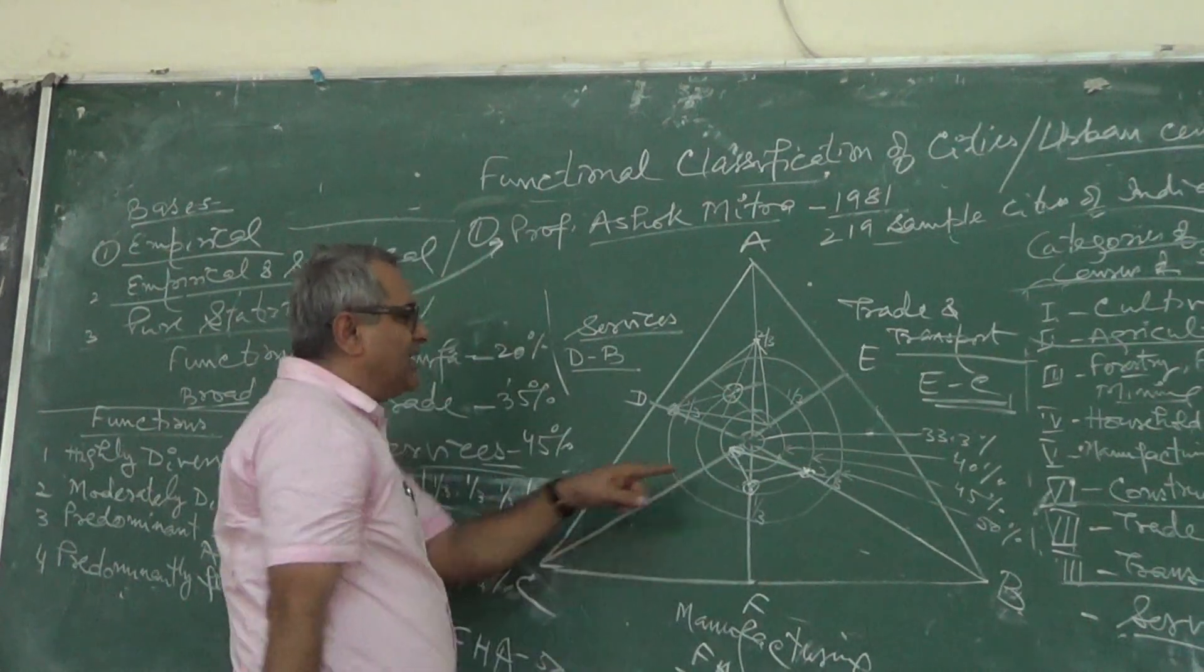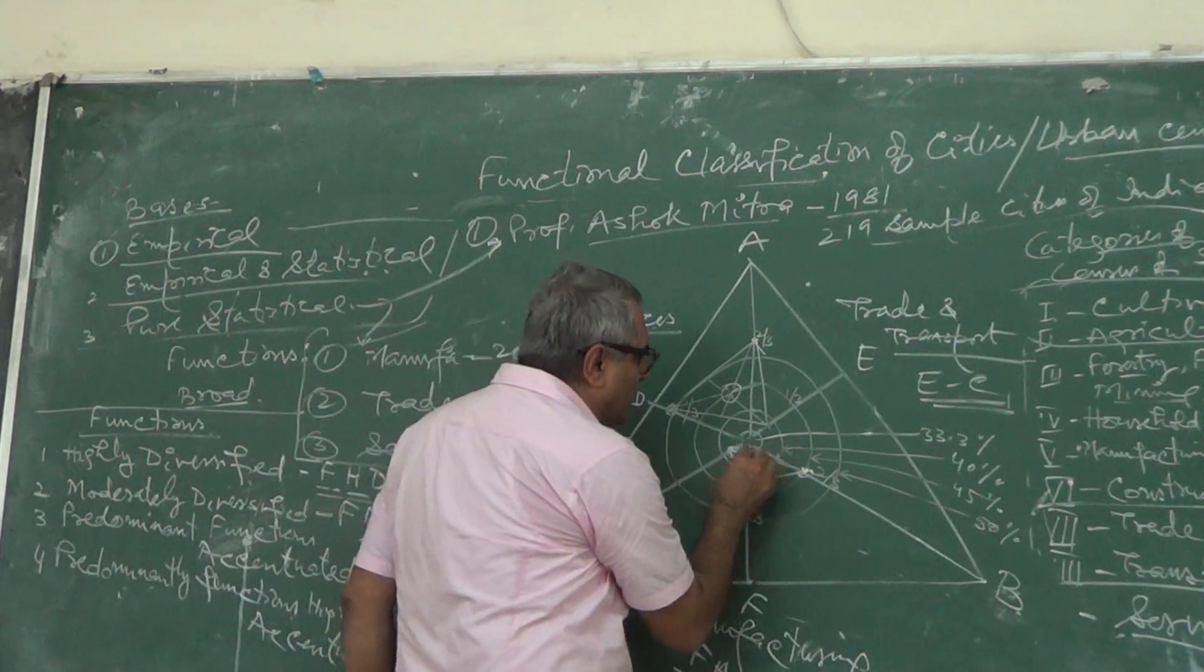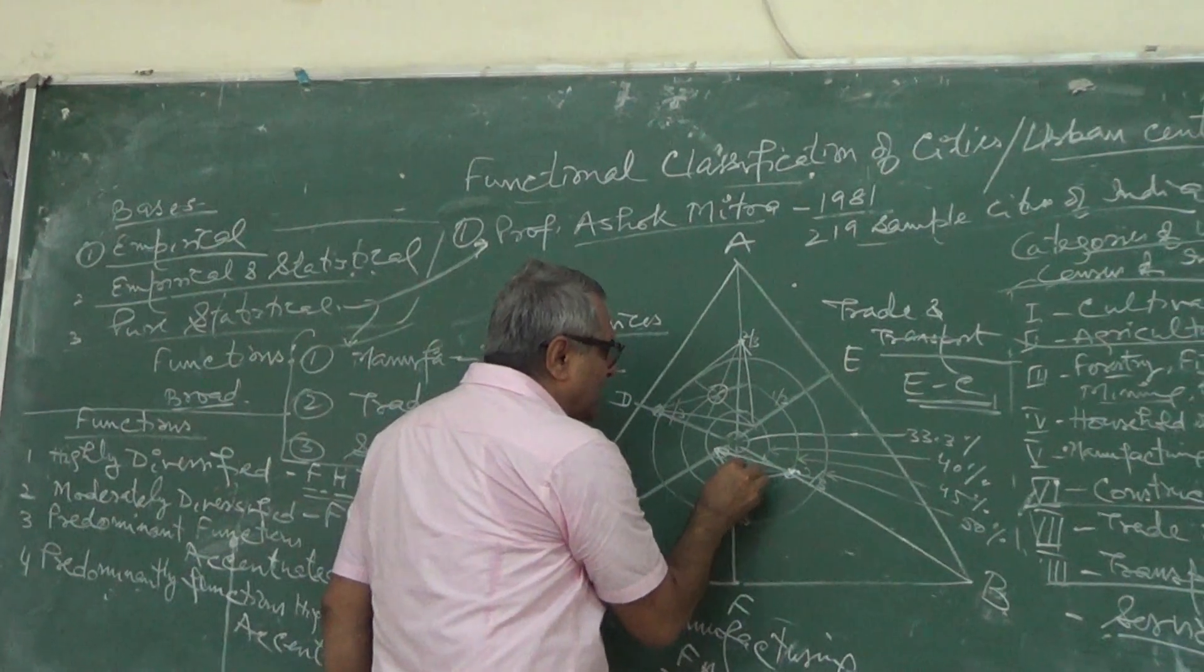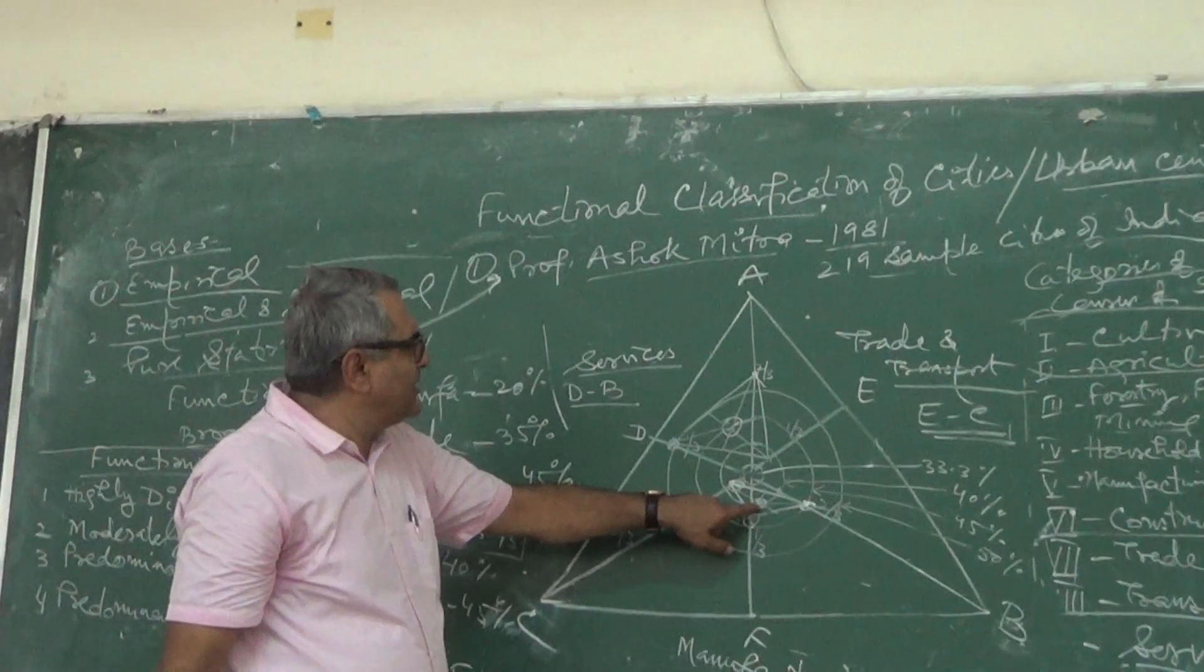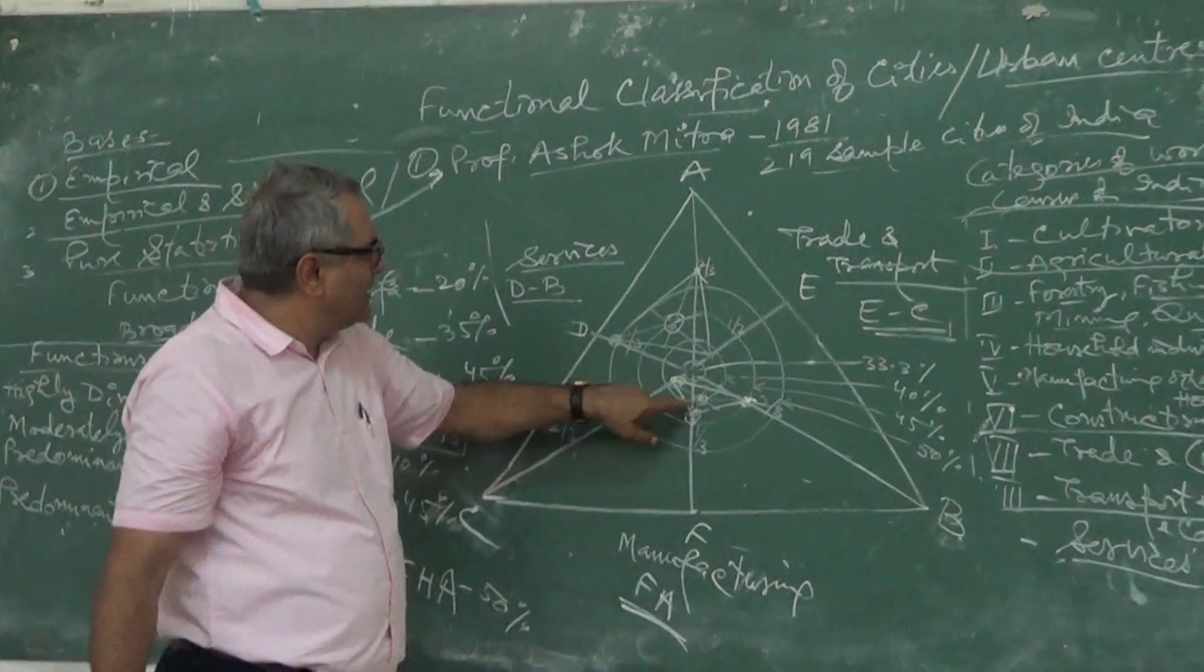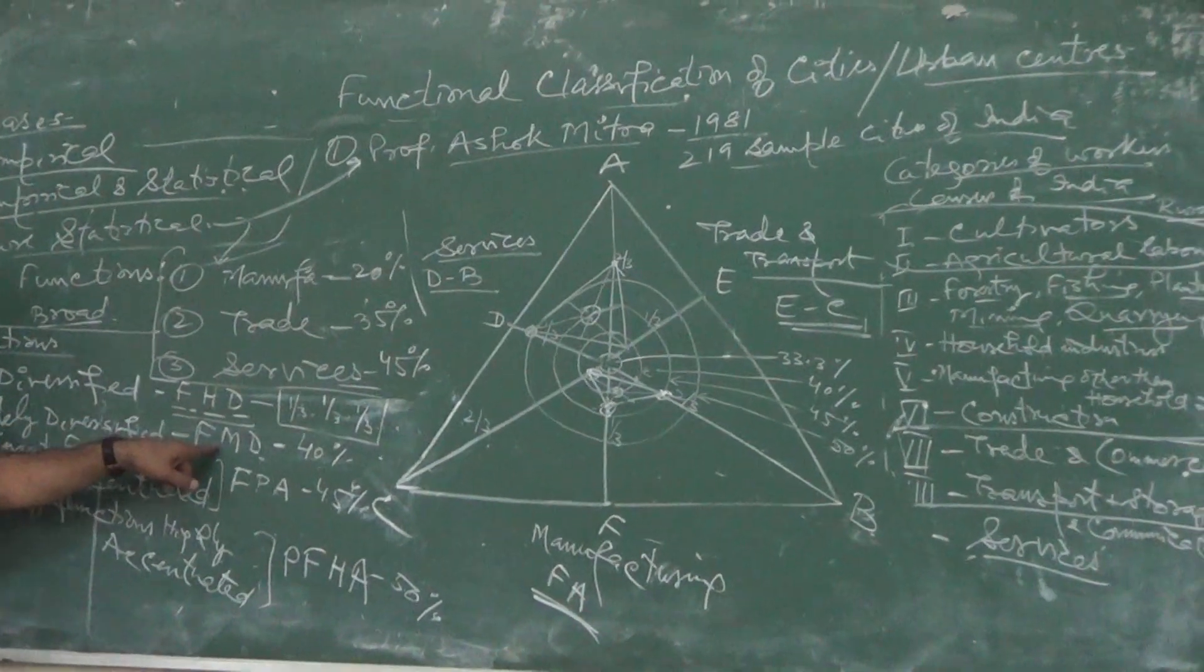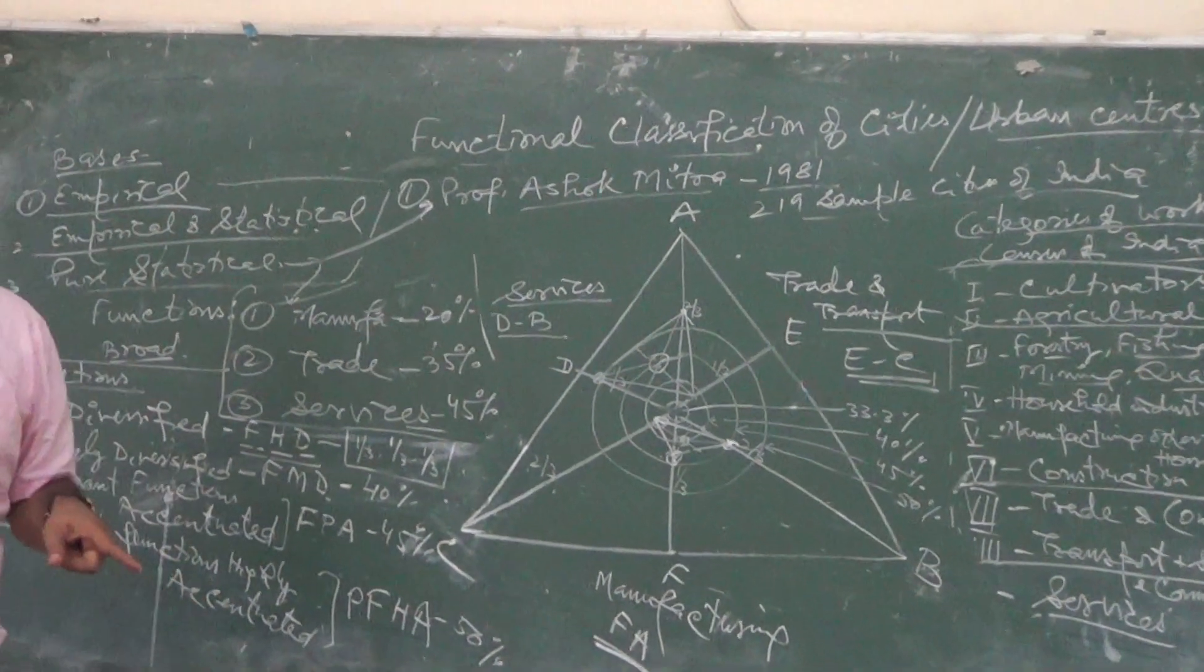These functions - so mostly we have central point development. From here, from here 20%. So this is centrally located, central point is here at 40. Moderately diversified functions, moderately diversified.